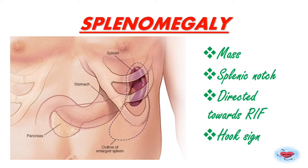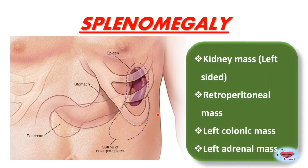The enlargement is directed toward the right iliac fossa. Hook sign is present — inability to hook under the left costal margin due to splenic enlargement. Conditions that may mimic splenomegaly include left-sided kidney mass, retroperitoneal mass, left-sided colonic mass, and left adrenal mass.